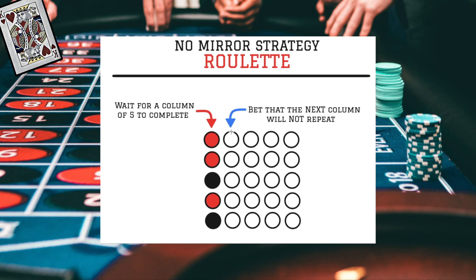So what would we bet on the first row of column number two? Since a red showed up on column one row one, we are going to bet against that — so our first bet would be black. Let's say we lose and another red shows up. What do we bet on row two? Again we would bet black, because we are betting the opposite of what happened in the previous column. Let's say another red shows up and we lose. What do we bet on row three? Since the first column is showing black, we are going to bet red — and this time we win.